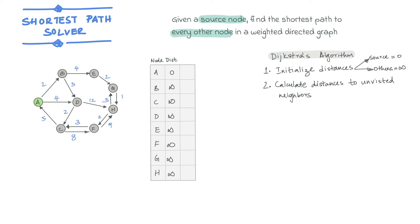These are the nodes B and D. C is not a neighbor since we cannot get to C from A. Based on the weights, the distance from A to B is 2, while that to D is 4.